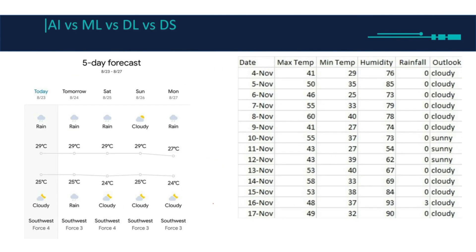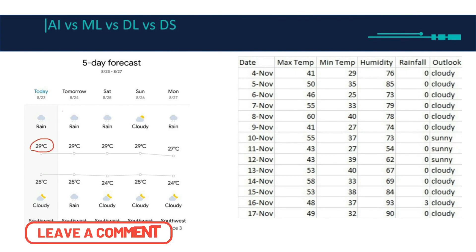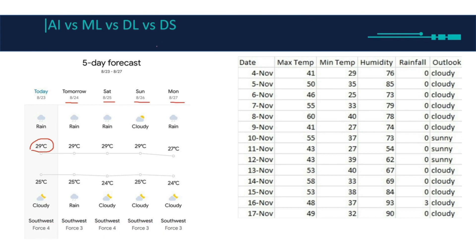Let's take a real example. Most of you have a smartphone with a weather widget that gives you today's temperature and also forecasts for tomorrow and the next five days. How does it know that? The app takes historical data from last year: the date, maximum temperature, minimum temperature, humidity, rainfall, and the outlook — for example, 'cloudy' — as the output label.